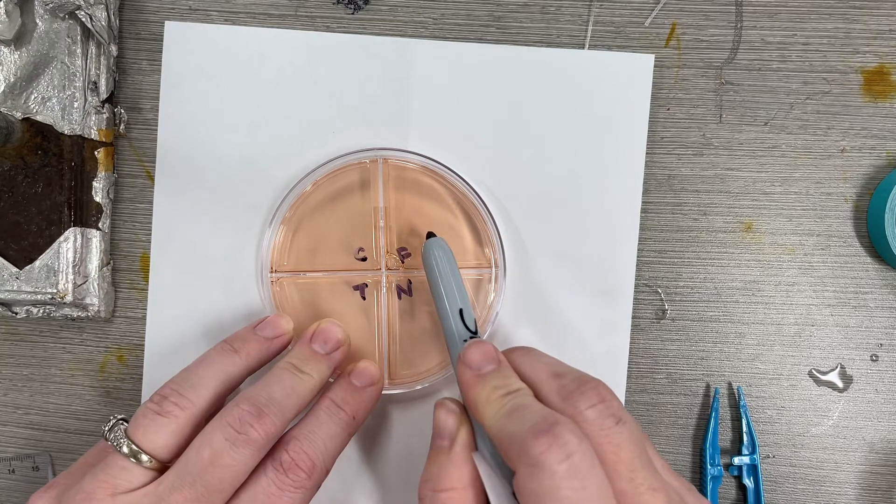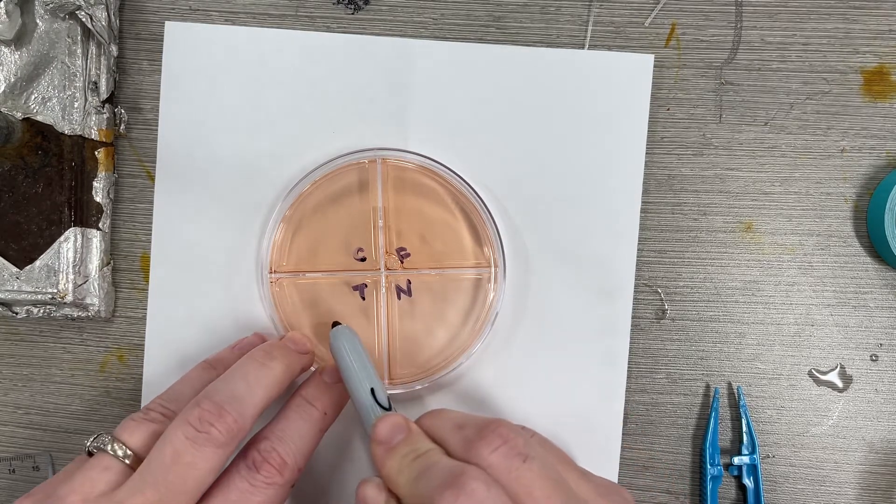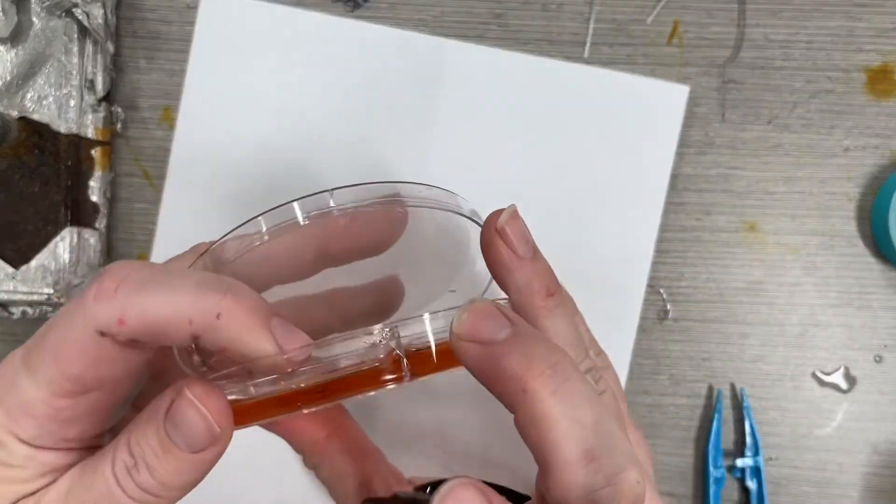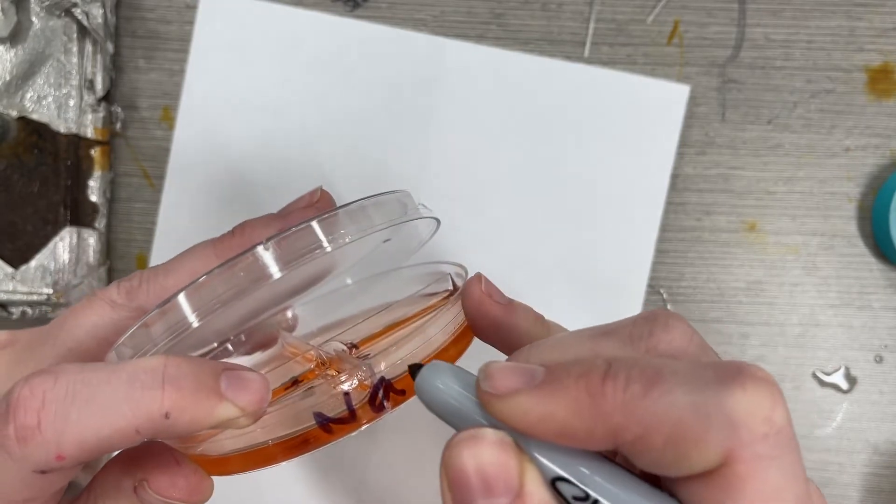So I'll put my control which is nothing, my fresh fruit juice here, my canned fruit juice here, and my meat tenderizer solution here. I'm going to carefully take my time on this and write my group names right here.